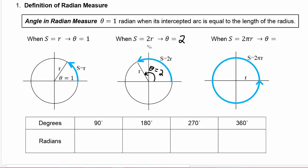So notice that θ is equal to the number of radii that the arc length is. So when the arc length was two times the radius, θ is equal to two. When the arc length was one times the radius, θ is equal to one.